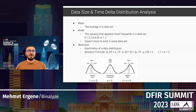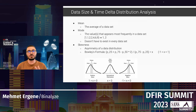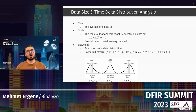Mean is the average of a data set — not the same as median. Mode is the value or values that appear most frequently in a data set. In the example, ones and twos occur most often, so the mode is one and two. A data set doesn't always have a mode.